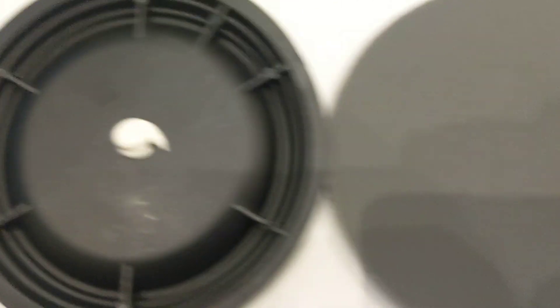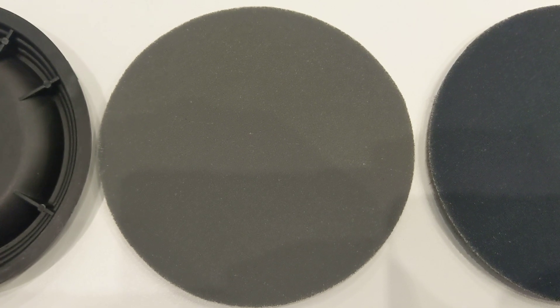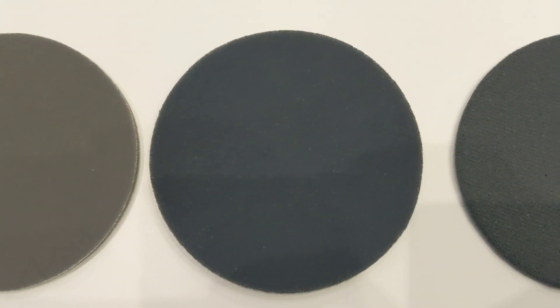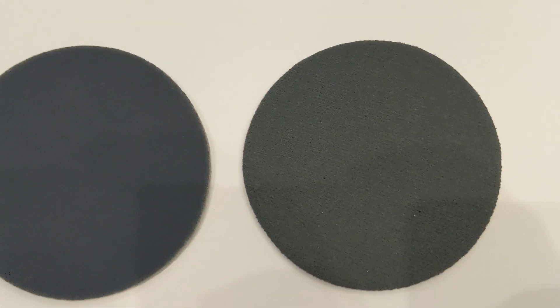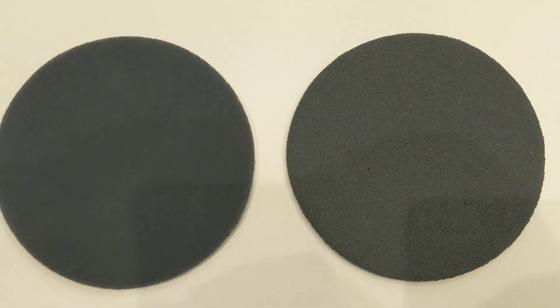This right here represents the polish. This represents a P5000D. This is 3000 grit and this is 2000 grit. You can see that on the back of each pad.